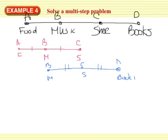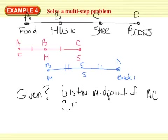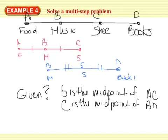State what is given and what is to be proved. What is given? We know that B is the midpoint of AC, and we know that C is the midpoint of BD. Those are the given things — stated in the paragraph: the music store is halfway between the food court and the shoe store, and the shoe store is halfway between the music store and the bookstore. Now we want to prove that the distance between the entrances of the food court and the music store is the same as the distance between the entrances of the shoe store and the bookstore.